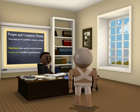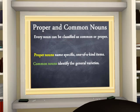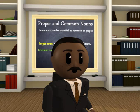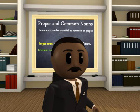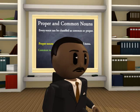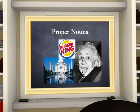Every noun can further be classified as common or proper. Proper nouns name specific, one-of-a-kind items, while common nouns identify the general varieties. A proper noun has two distinctive characteristics: one, it will name a specific, usually one-of-a-kind item; and two, it will begin with a capital letter no matter where it occurs in a sentence. Some examples of proper nouns are the Taj Mahal, Burger King, and Albert Einstein, since only one of each exists.